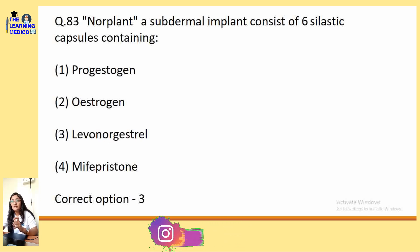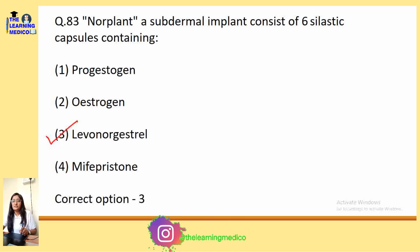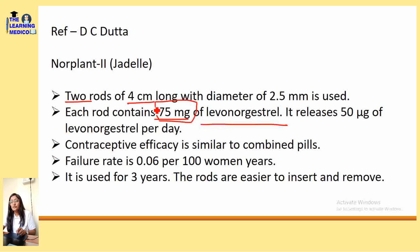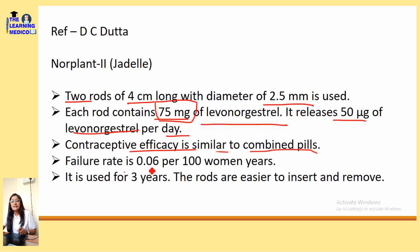Norplant is a subdermal implant consisting of 6 silastic capsules containing levonorgestrel. Norplant 2 uses 2 rods of 4 cm long with a diameter of 2.5 mm, each rod containing 75 mg of levonorgestrel. It releases 15 mcg of levonorgestrel per day. Contraceptive efficiency is similar to combined pills. The failure rate is 0.06 per 100 women per year. It is used for 3 years and the rods are easier to insert and remove.